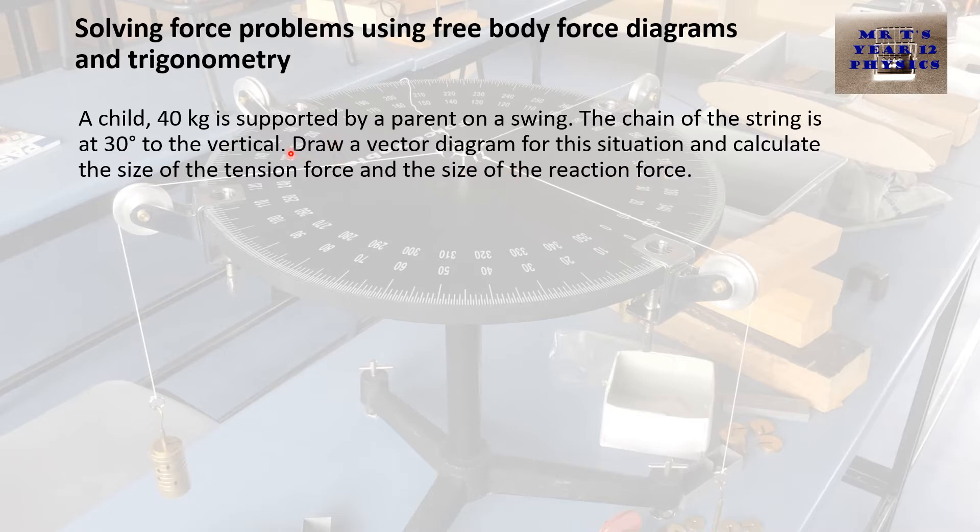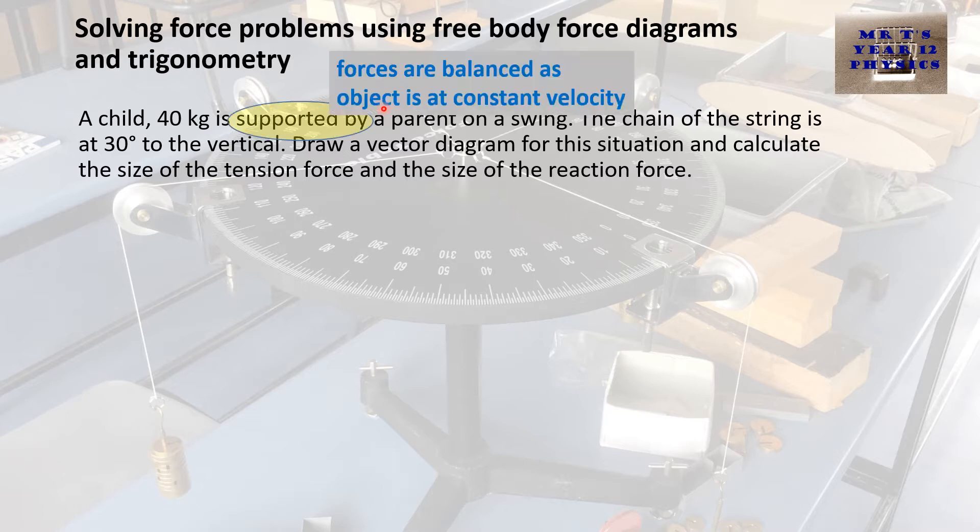Before we start, I just want to say the first sentence says the child is supported. If a child is supported, they're being held, and that means the child is at a constant velocity, at 0 meters per second. Therefore, that tells us that the forces are going to be balanced in this situation. This is important for when I draw my forces.